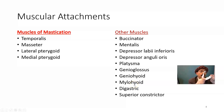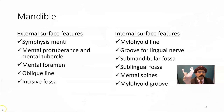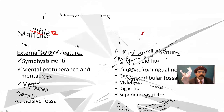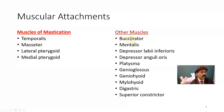The mylohyoid muscle originates along the mylohyoid line. The digastric muscle attaches anteriorly at the digastric fossa. The superior constrictor muscle attaches near the third molar teeth. The muscles of mastication are derived from the first pharyngeal arch and are all innervated by the mandibular division of the trigeminal nerve. Muscles of facial expression are innervated by the facial nerve. The anterior digastric muscle is innervated by the mandibular nerve. The superior constrictor is innervated by the pharyngeal plexus.